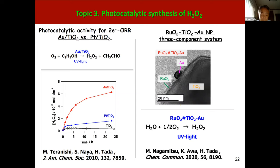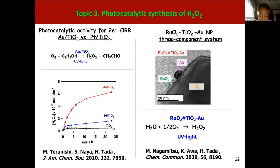Recently, we synthesized a three-component hybrid photocatalyst consisting of ruthenium oxide, TiO2, and gold nanoparticles, prepared by a hydrothermal method. We studied photocatalytic activity for hydrogen peroxide synthesis from water and oxygen under UV light irradiation.